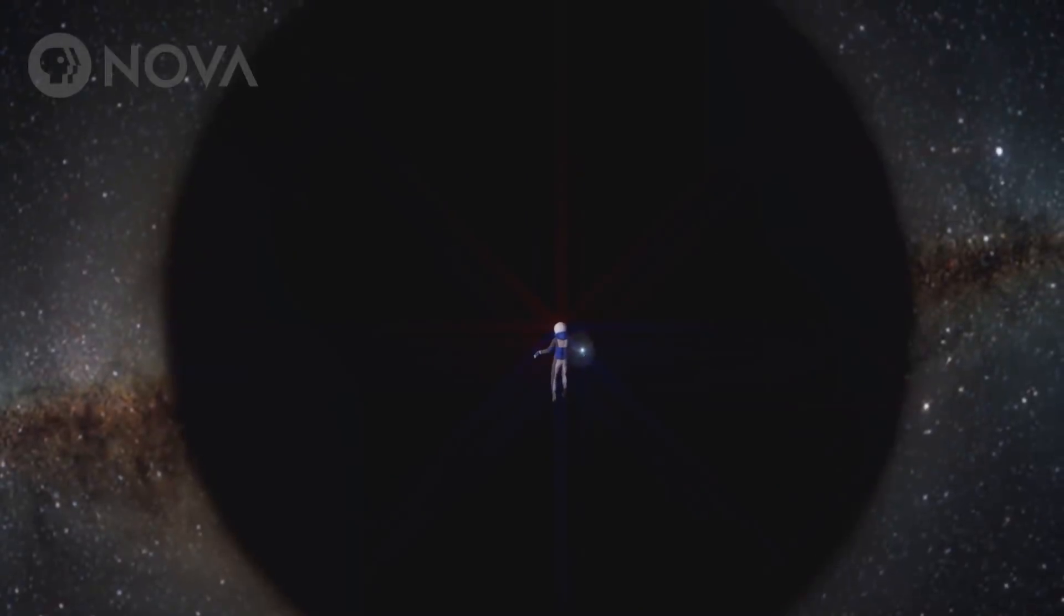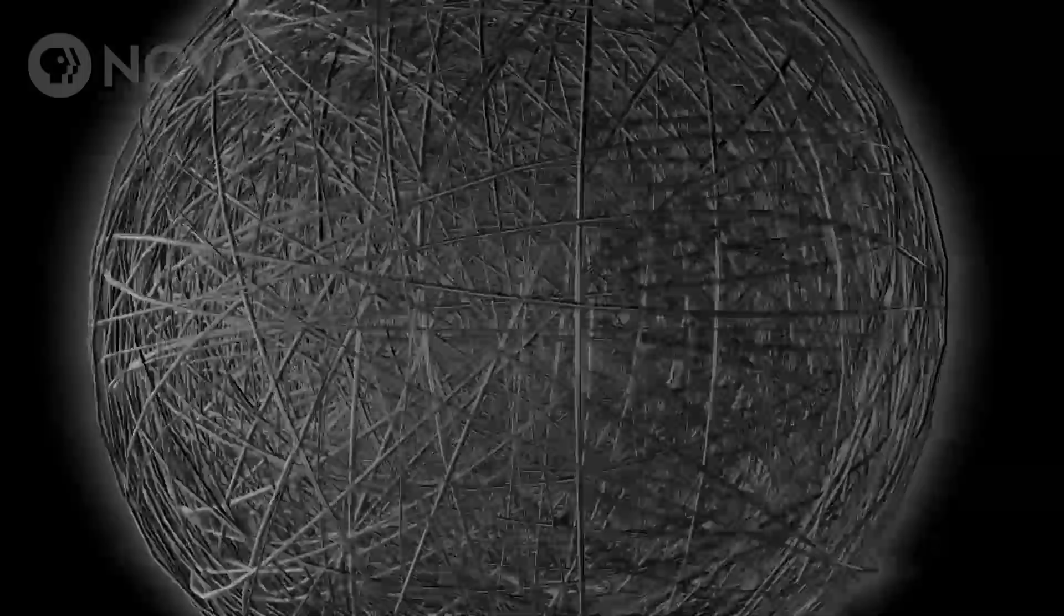So if something like a particle or you fall into a black hole, well, you're made of strings. So your strings will combine with the black hole strings, and they'll get longer, and the black hole fuzzball grows.